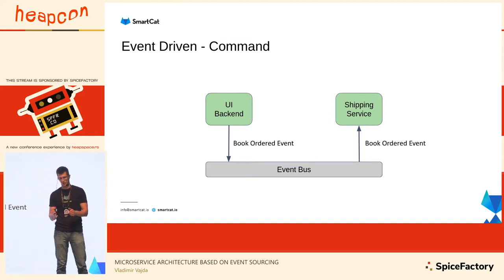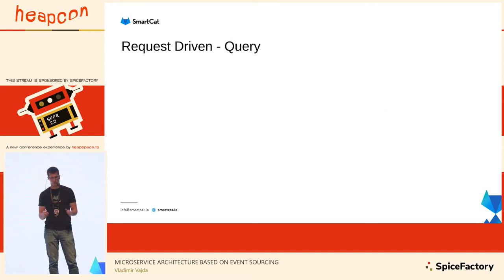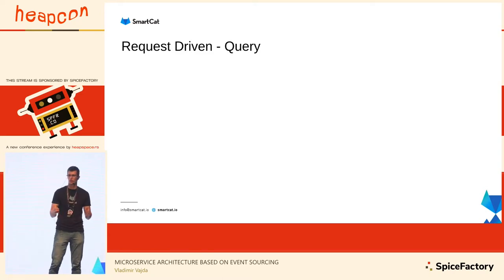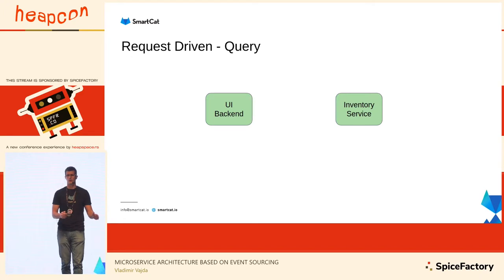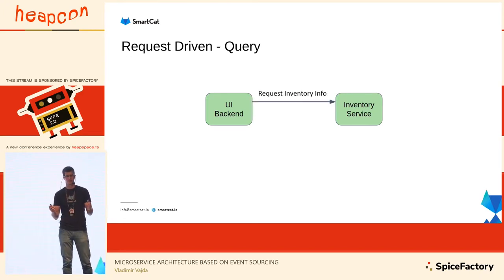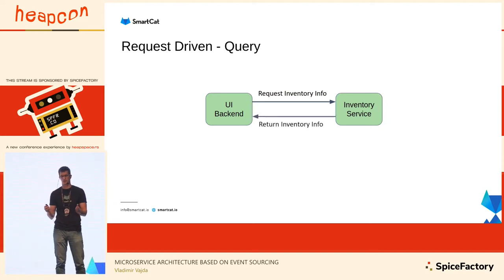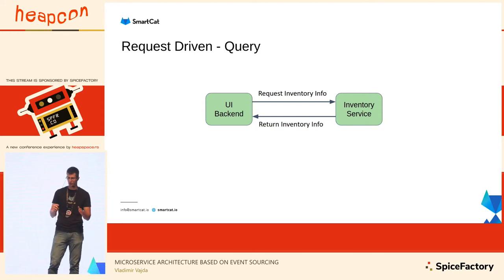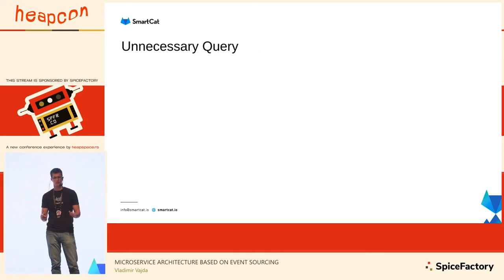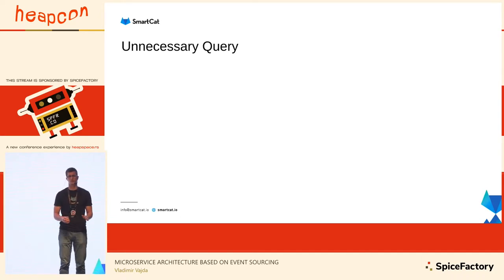This makes those two services loosely coupled instead of tightly coupled. The third and most problematic part is the query. If you have a UI backend and inventory service, in request-driven architecture you'd send a standard request to get inventory info — available books — and the service returns the information. Before mapping queries to event-driven architecture, I want to mention that there are situations where you think you need the query pattern but you can actually avoid it, and it's best to avoid it if you can.